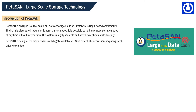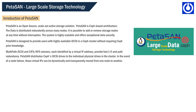PETA SAN is designed to provide users with highly available ISCSI in a CEF cluster without requiring CEF prior knowledge. Multipath ISCSI and CIFS, NFS volumes, each identified by a virtual IP address, provide fast IO and path redundancy. PETA SAN distributes CEF's ISCSI drives to the individual physical drives in the cluster. In the event of a node failure, these virtual IPs can be dynamically and transparently moved from one node to another.